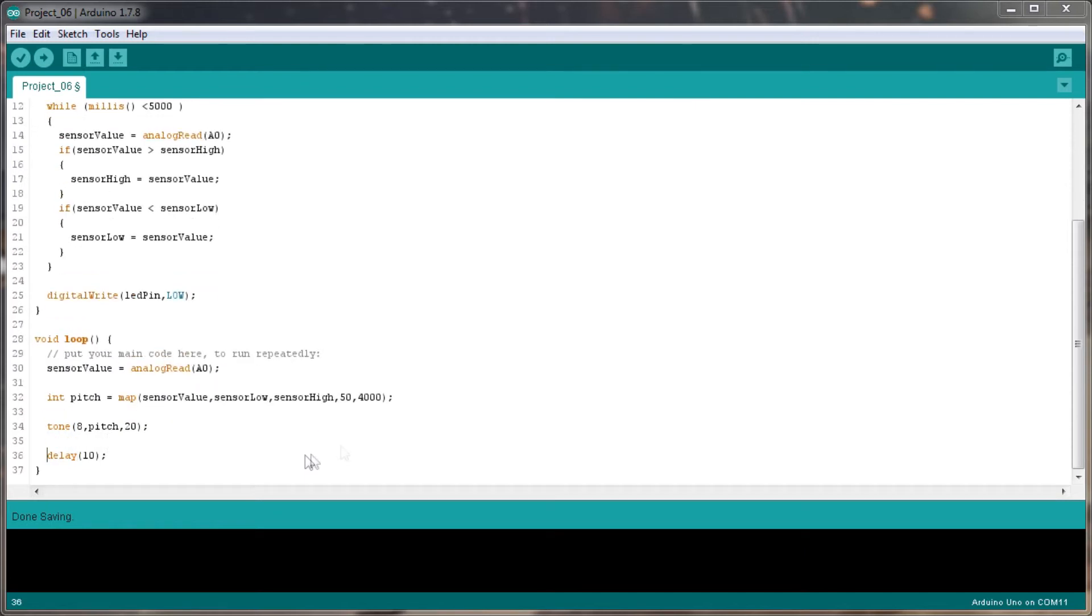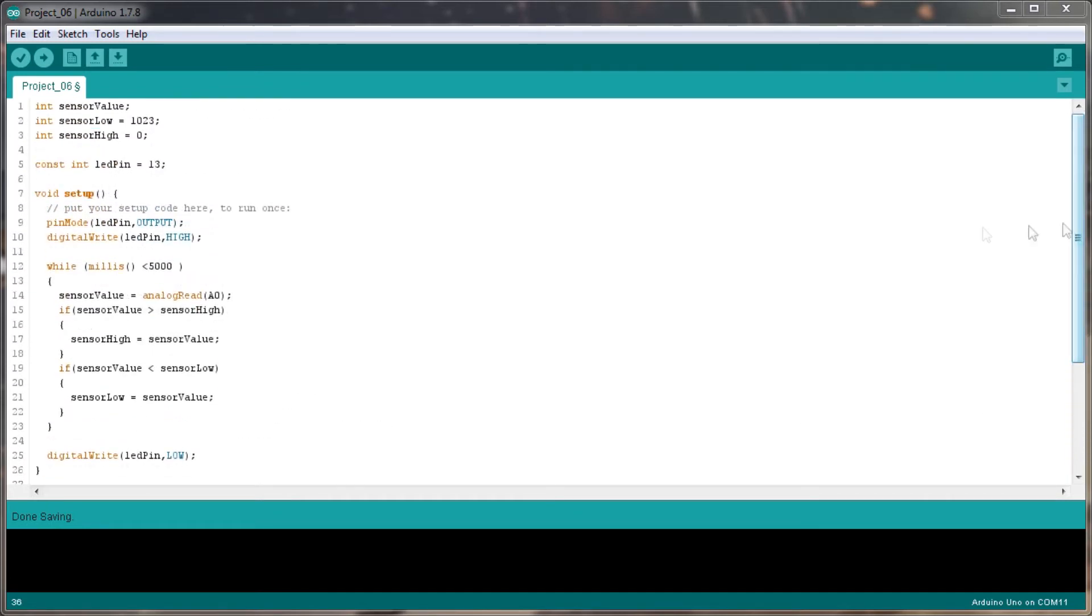Okay, that's all of the code written, so what have we actually got then? What we're doing is we're setting up while milliseconds is less than 5000. If the sensor value is going to be read by the actual analog port, which is the photosensor.